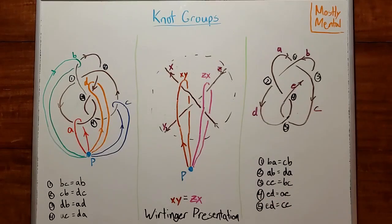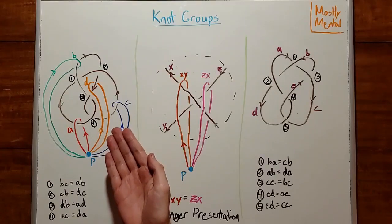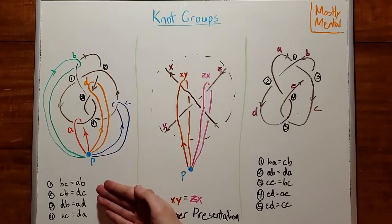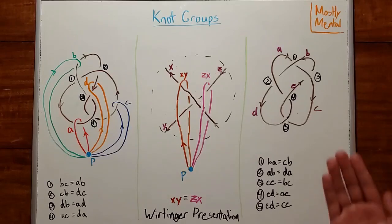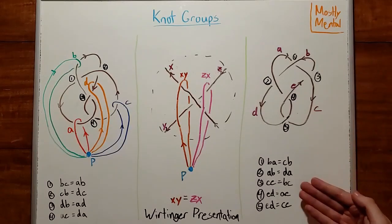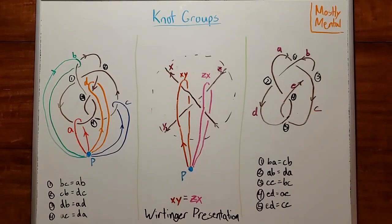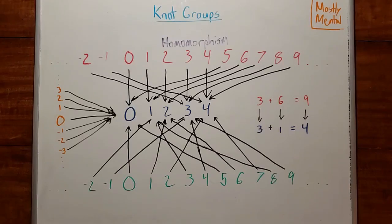For example, if we have our figure 8 knot like so, we get these constraints. Or if we have a knot like this one, we get this knot group. So now we've got a way to find and express the knot group. But how do we actually use it?